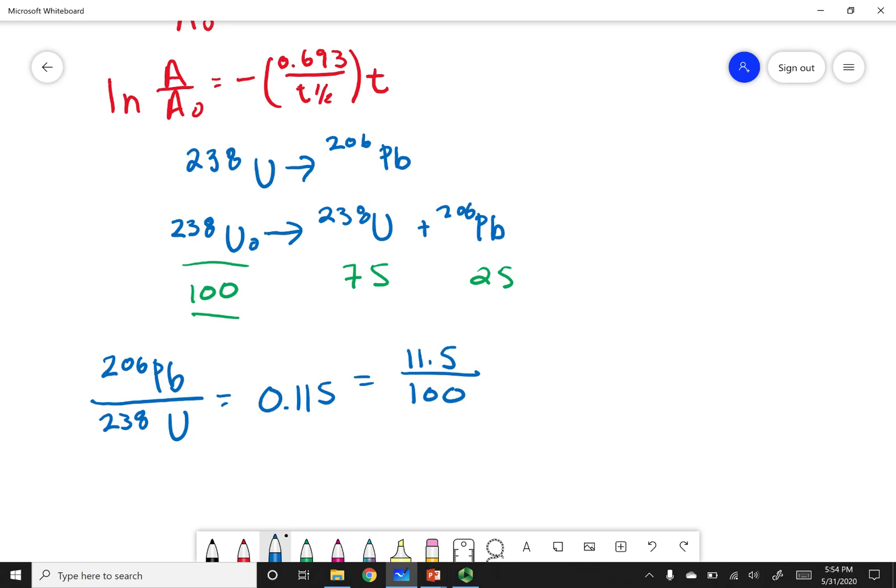So if this is the case, I'm ratioing the amount currently of Lead to Uranium. Well, I can go ahead and plug these numbers to get my original Uranium concentration out. So in this case, I had 11.5 Lead, 100 Uranium currently, so that means I had originally 111.5 of my Uranium-238.